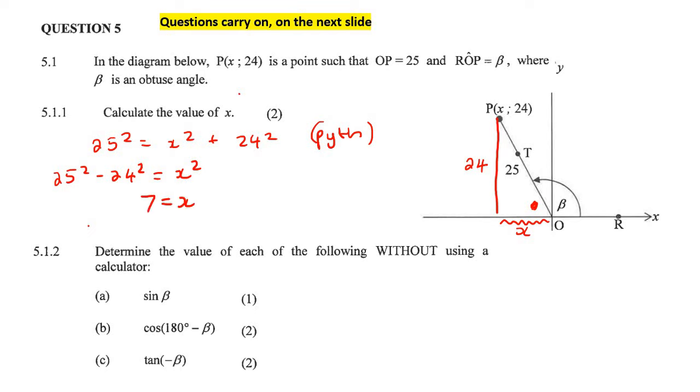Now be careful. This length is 7, but because it's going in the negative direction, this x value here would actually be negative 7, right? Because it's in the negative, it's where x is negative. So the value of x is negative 7. So I'm just going to put in a negative 7 over there just so we can remember that.